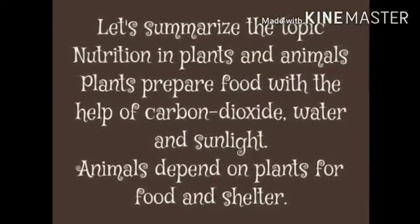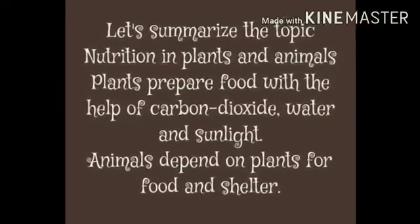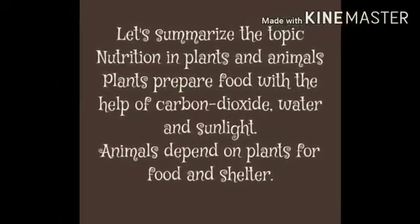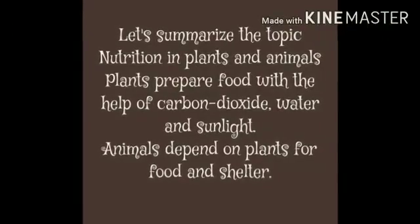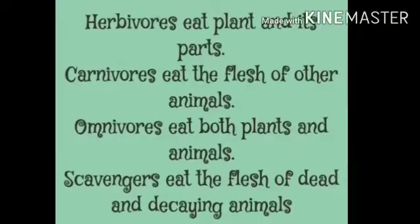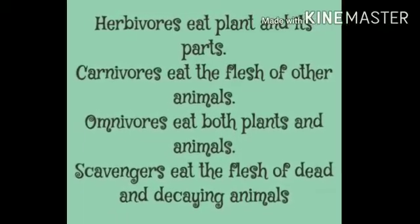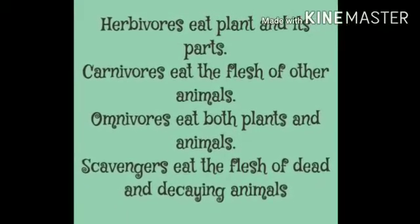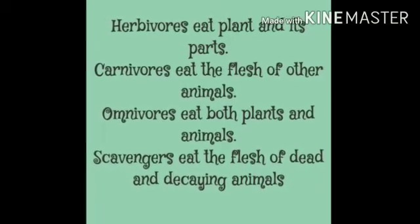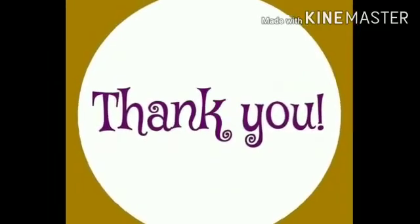Let us summarize the topic nutrition in plants and animals. Plants prepare food with the help of carbon dioxide, water and sunlight. Animals depend on plants for food and shelter. Herbivores eat plants and their parts. Carnivores eat the flesh of other animals. Omnivores eat both plants and animals. Scavengers eat the flesh of dead and decaying animals.